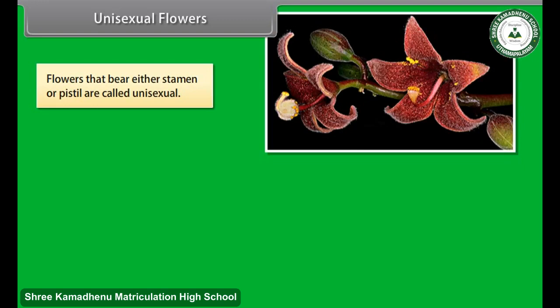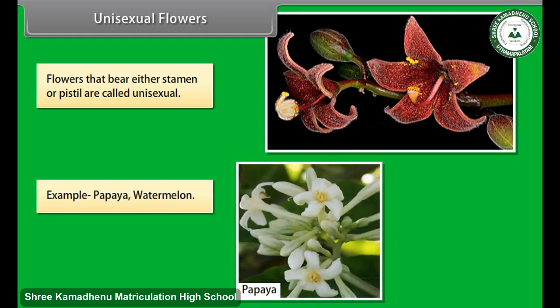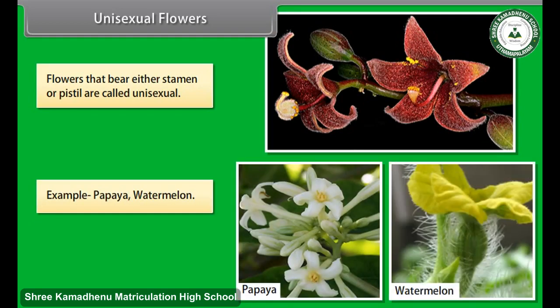Flowers that bear either stamen or pistil are called unisexual flowers. Examples include papaya and watermelon.